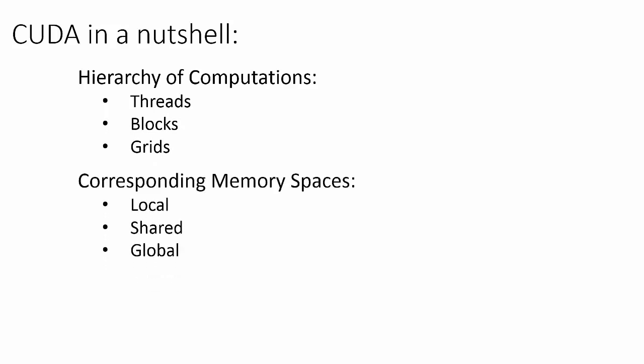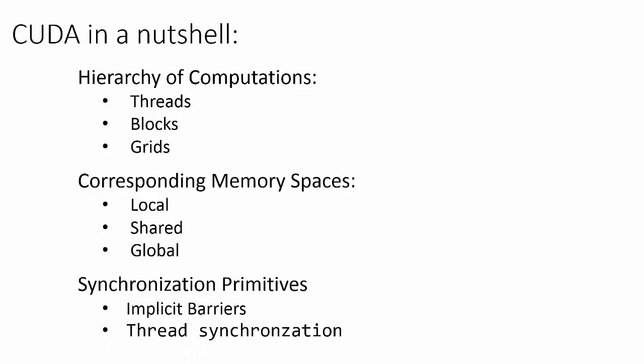As described in the CUDA programming guide, there are three key abstractions at the core of CUDA, which consist of a hierarchy of computations, with a corresponding memory hierarchy, and finally barrier synchronization primitives, as we've discussed in this lecture.